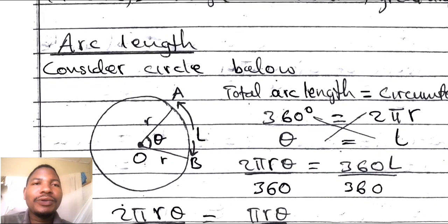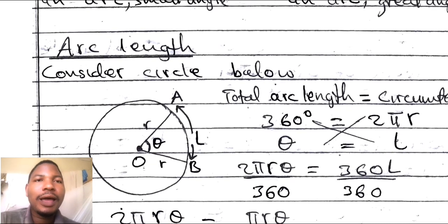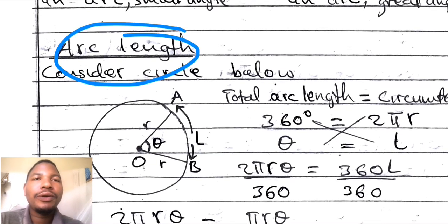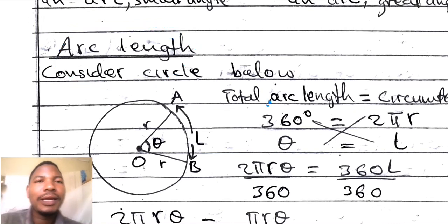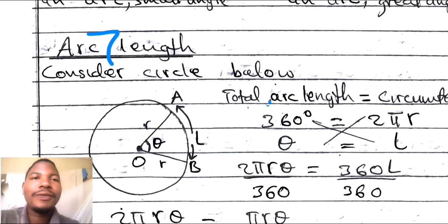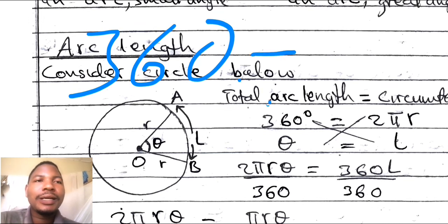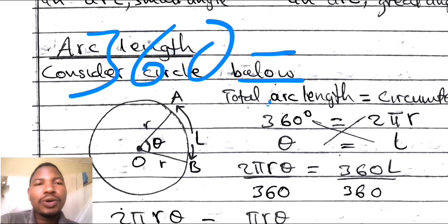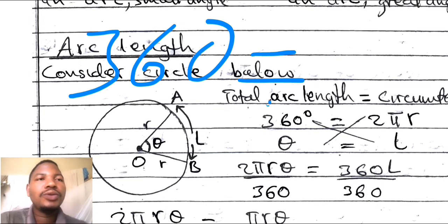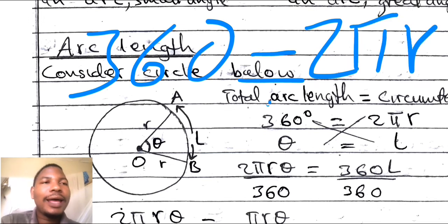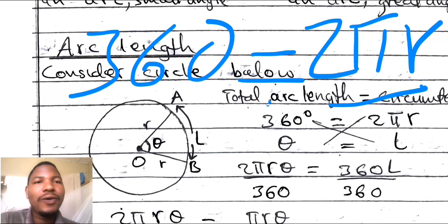Also, there is another concept: what we call the arc length. How can we calculate arc length? We know that an arc is a part of the circumference of a circle. So how do we find arc length? We are supposed to use the formula. We know that all circles have 360 degrees. For a circle with 360 degrees, we can calculate its total arc length by taking the formula for the circumference of a circle, which is 2πr.